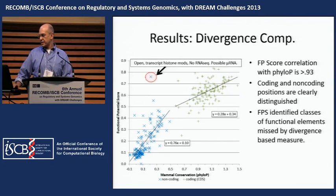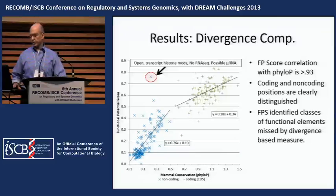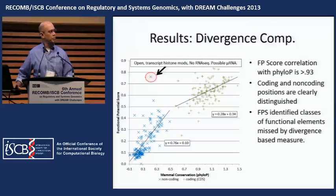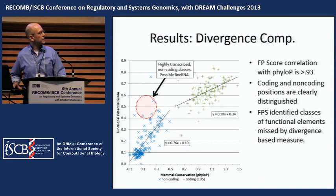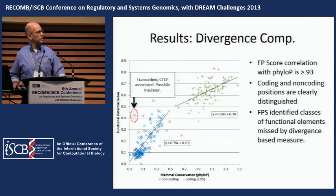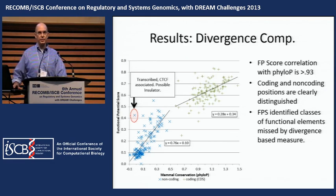Review of the specific assays defining each class — the functional signature — provides some interpretive clues. One class is open with histone modifications indicating transcription but no RNA-seq signal, suggesting possible microRNAs. Another is a highly transcribed but non-coding class, suggesting possible lncRNA. And a third has a very low phylo-p score but shows a CTCF binding association in the ChromHMM class, considered a possible insulator.